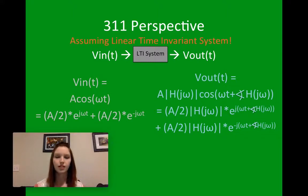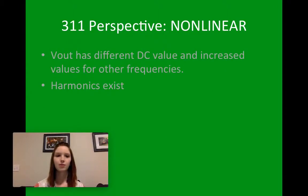Now, this is assuming that we have a linear time invariant system, which, if you look at it, we actually don't. We have a nonlinear system. So now, from a nonlinear perspective, if we actually look at the real output of our system, we're going to see that the sinusoidal wave has a different DC value for Vout and increased values for other frequencies. And this is because there are harmonics that exist due to nonlinearity.